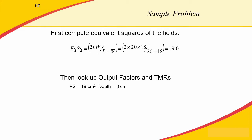Next, we look up our output factors and TMRs using a field size of 19 by 19 cm and a treatment depth of 8 cm. Once we look up all our factors, we plug those into our equation. We know the treatment dose to be delivered, and then we can calculate the number of MUs needed.